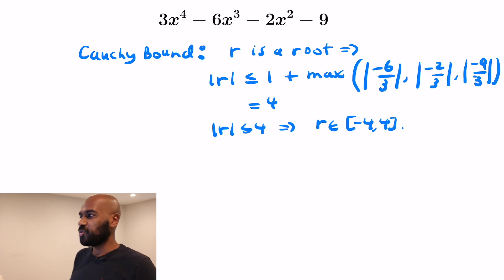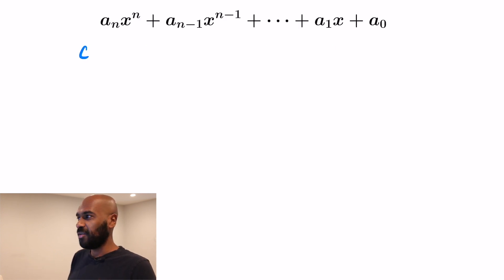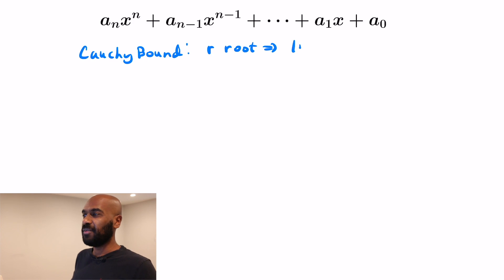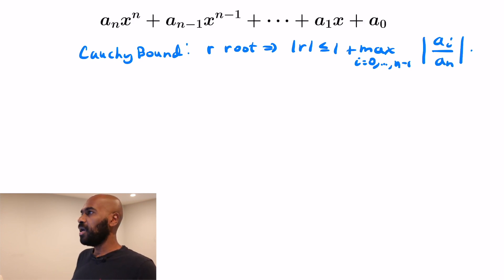This works for complex numbers as well — the modulus of the complex number is going to be less than or equal to 4. So in the real case, our roots are going to be between negative 4 and 4. Now the question is why does this work in general? Let's write down what the Cauchy bound looks like for a general polynomial, then see why it actually holds. So let r be a root; what we're saying is that the absolute value of r is less than or equal to 1 plus the maximum over all coefficients that are not the leading coefficient, i from 0 to n minus 1, of the absolute value of a sub i divided by a sub n, the leading coefficient.